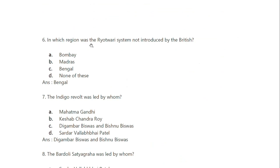In which region was the Ryotwari system not introduced by the British? The Ryotwari system was introduced in Bombay, Madras, and Assam. So these are the places where it was introduced — four places in total.